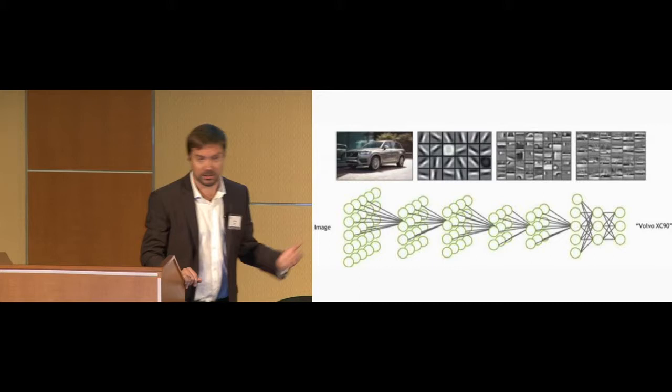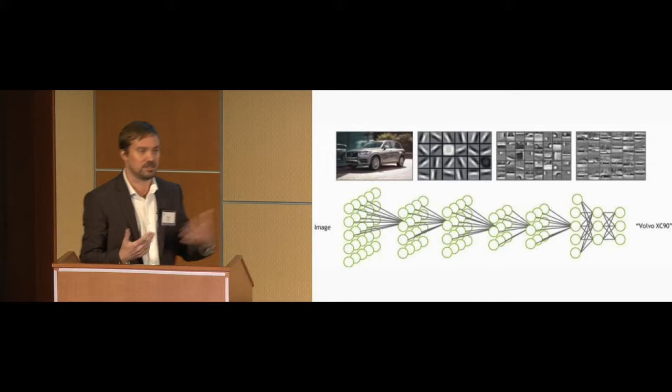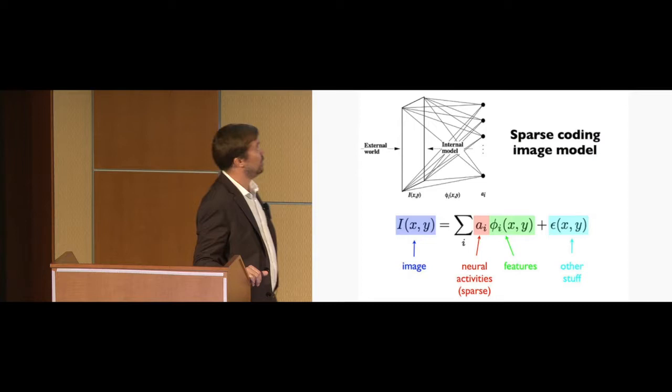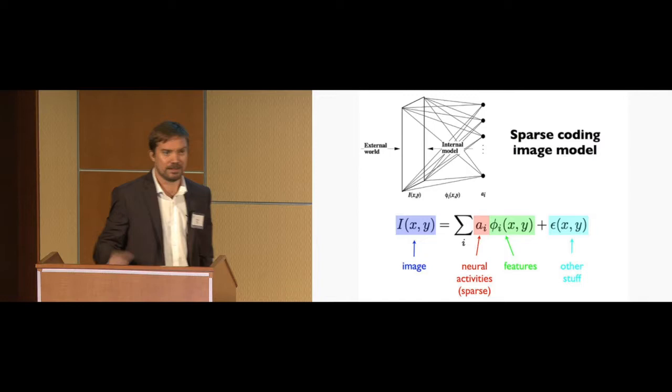So in the deep learning framework, we can think of this as the first layer. This is the edge detection. We know that we can understand edges because we can understand sketches. If an artist sketches out a scene, we can instantly know what that is, even though it's only edges.